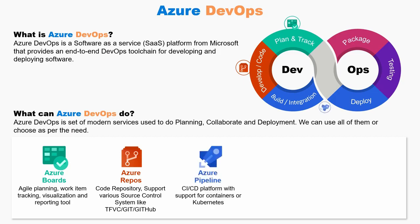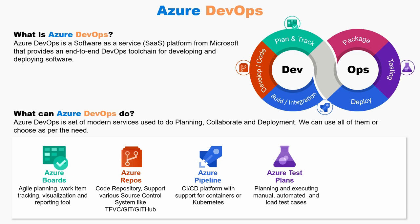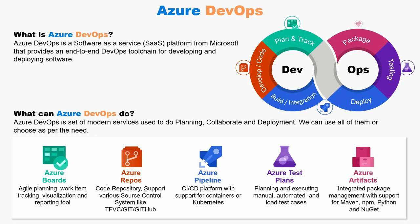Then we have Azure Pipeline, which provides build and deploy services to support continuous integration and continuous delivery of your application. Then we have Azure Test Plan, which provides several tools to test your applications including manual testing and automated testing. The last one is Azure Artifacts. It allows teams to share Maven, NPM, and NuGet packages from public and private sources and integrate package sharing into your CI/CD pipeline.